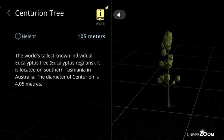Centurion tree, height: 105 meters. The world's tallest known individual eucalyptus tree, Eucalyptus regnans. It is located in southern Tasmania in Australia. The diameter of Centurion is 4.05 meters.